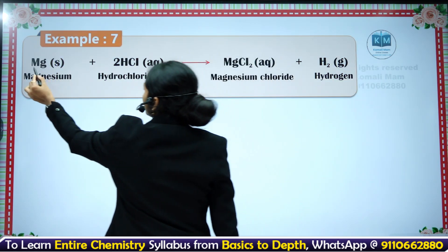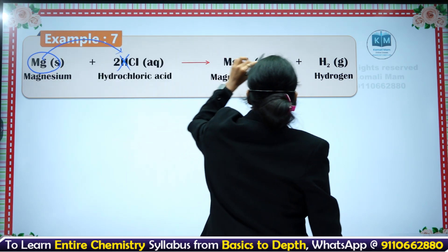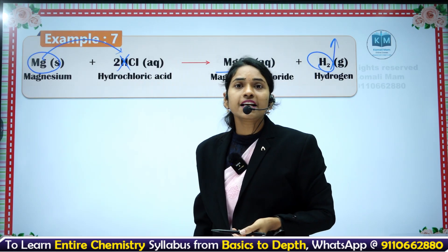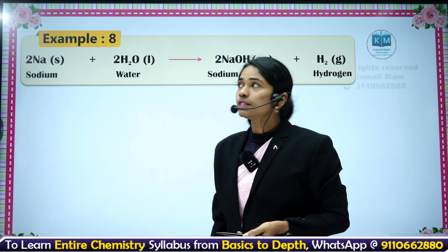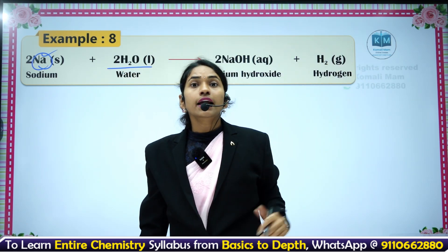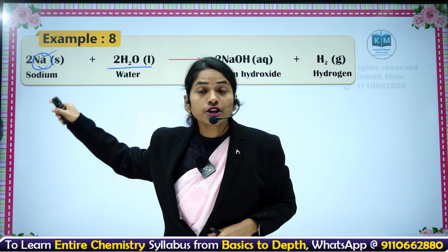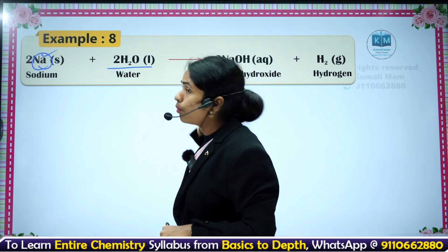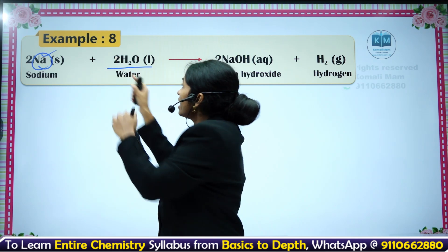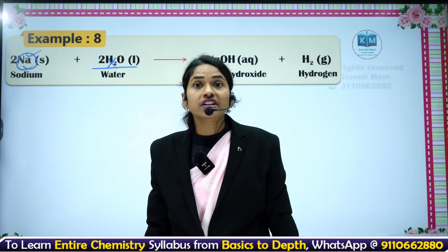If instead of iron you put magnesium in hydrochloric acid, magnesium will also displace hydrogen because magnesium is more reactive than hydrogen. Magnesium replaces hydrogen, hydrogen gas comes out, and we get magnesium chloride. This is also one of the displacement reactions. Take sodium metal and put it in water. Sodium is more reactive than hydrogen, so sodium displaces hydrogen from the water — H2 gas comes out and NaOH is formed as the product. This is also an example of a displacement reaction.